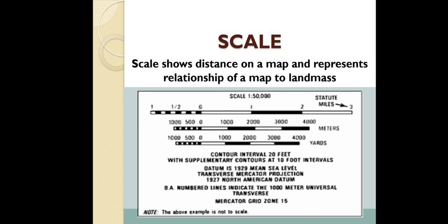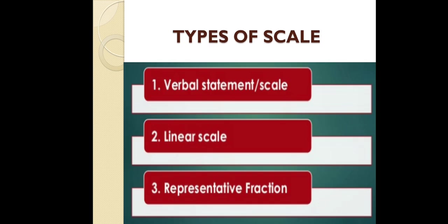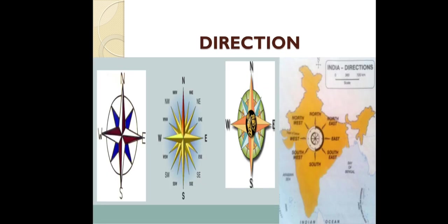Second is the scale, which denotes the relationship between map distance and actual ground distance. There are three types of scale: first is the verbal scale, like one centimeter shows one kilometer; second is the graphical scale, when scale is shown graphically; and third is the representative fraction, for example 1:50,000.